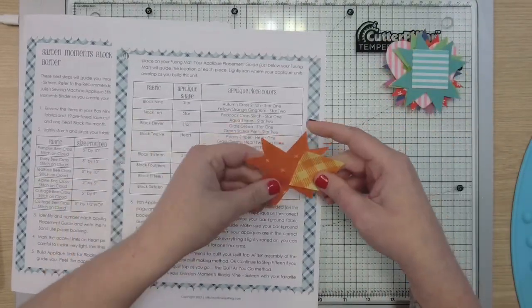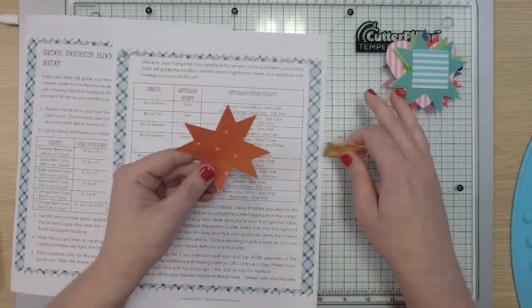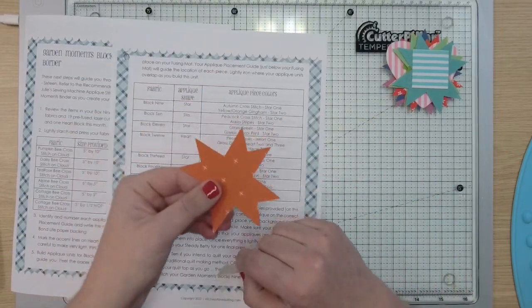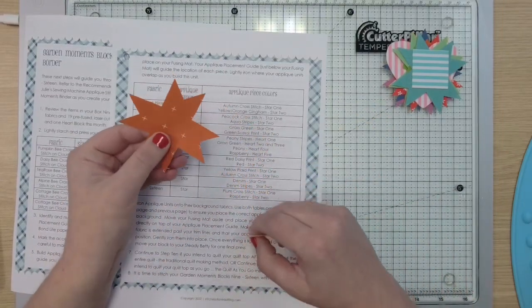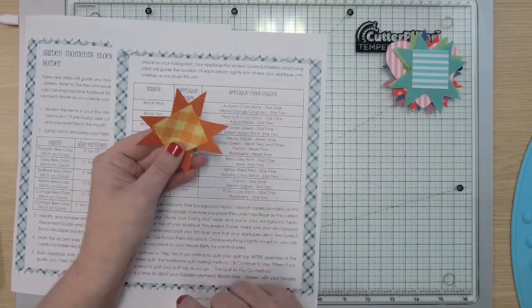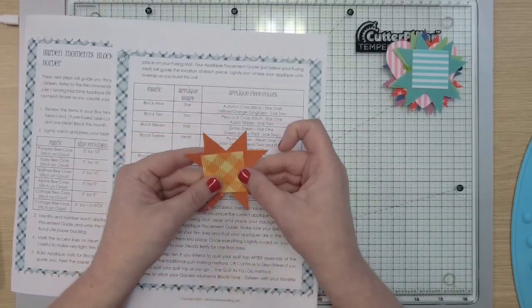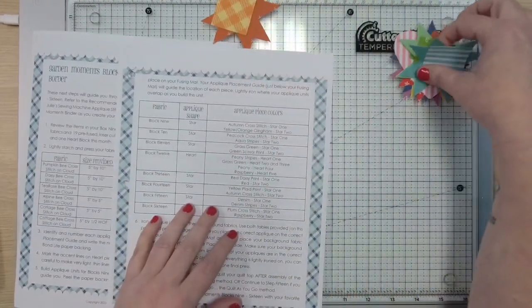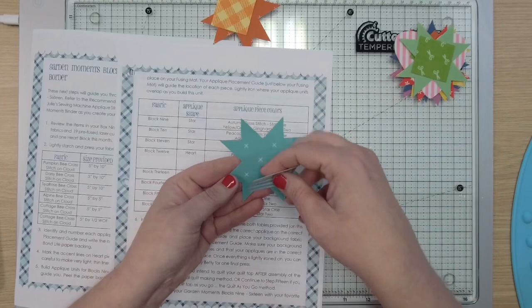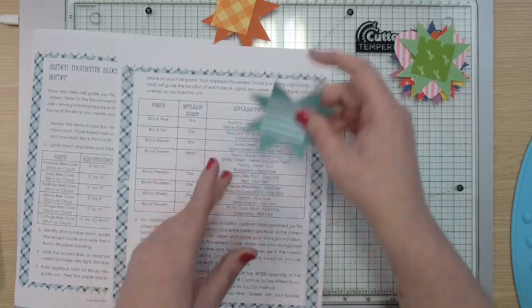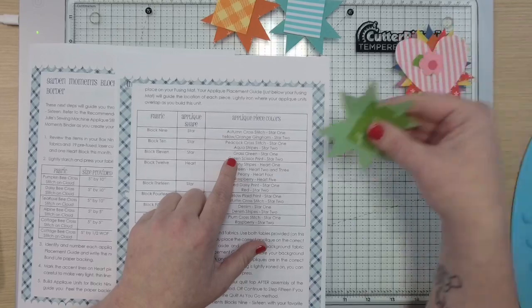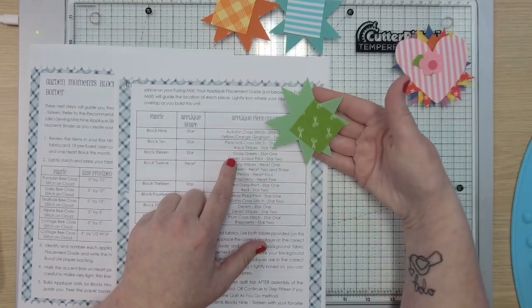So block nine you have your autumn. They do have pumpkin and autumn—they pretty much look exactly alike but in any case, fun fact, this is autumn cross stitch and then you have your gingham for the center of your star. So this is your block nine. Then for block 10 you have the peacock kisses with the matching stripe. Then for 11 you have your grass green background and the scissor print for your star.